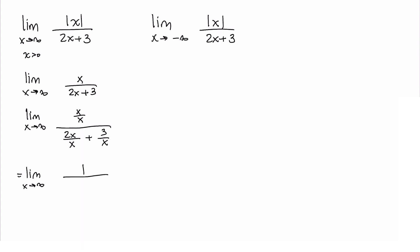You have 1 over 2 plus 3 over x. Ordinarily I would write the limit of the numerator over the limit of the denominator, but in this case we can see what's going to happen.